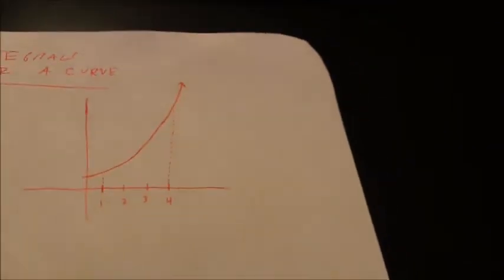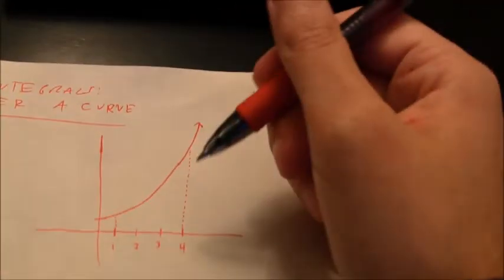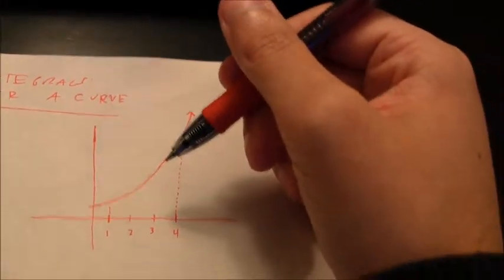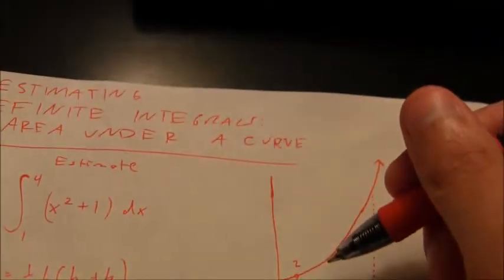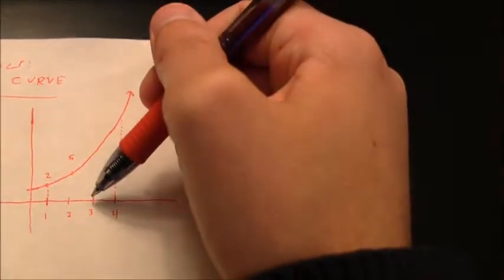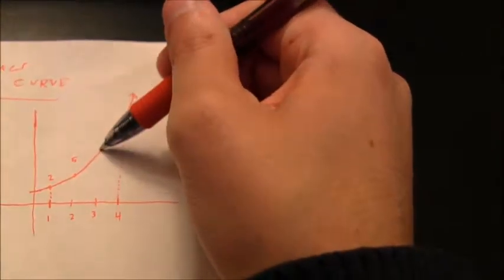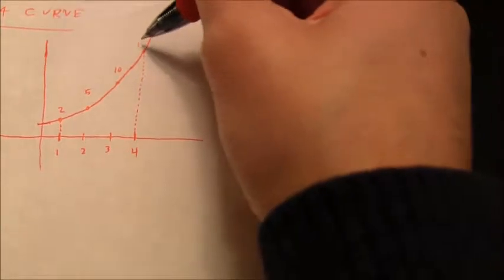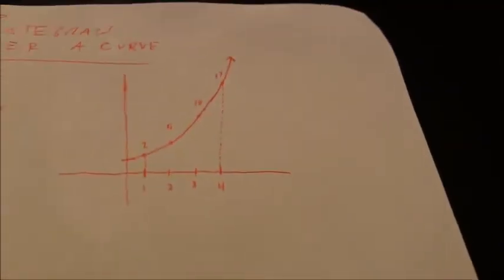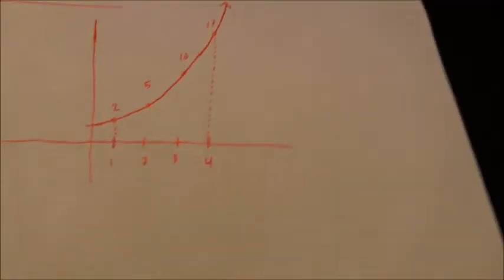I suggest putting the y-coordinate of points along your sketch of the curve, which will allow you to set up your trapezoids very easily. If I put 1 into x squared plus 1, I get 2. Putting in 2 gives 5, putting in 3 gives 10, and putting in 4 gives 17. Those are going to end up being the lengths of the bases of my trapezoids.